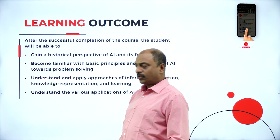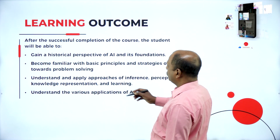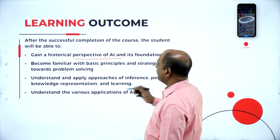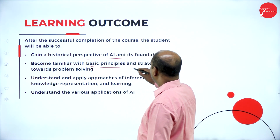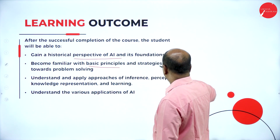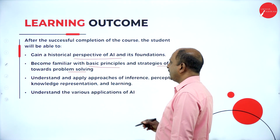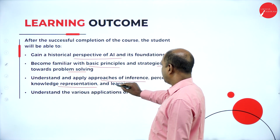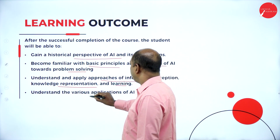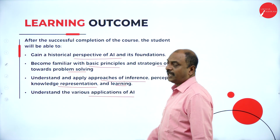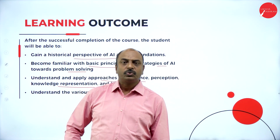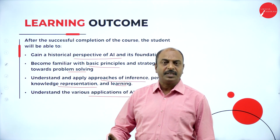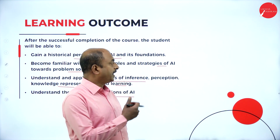Learning outcome: at the end of the course, students must be in a position to know the historical research of AI, and be familiar with the basic principles and strategies of AI towards problem solving, and understand approaches of inference and knowledge representation and learning, and understand the various applications of AI. These are the main aims of this course.